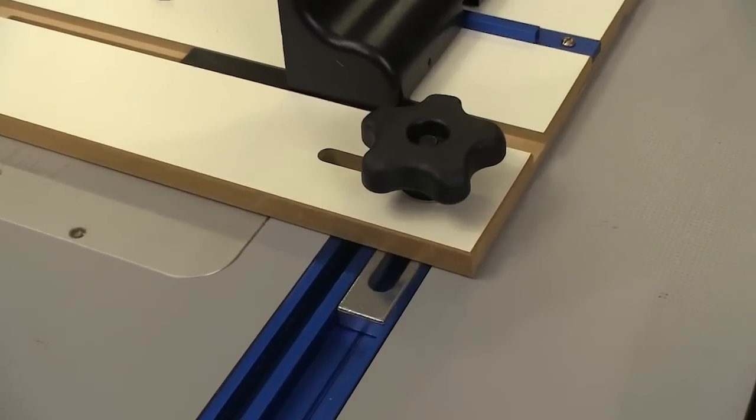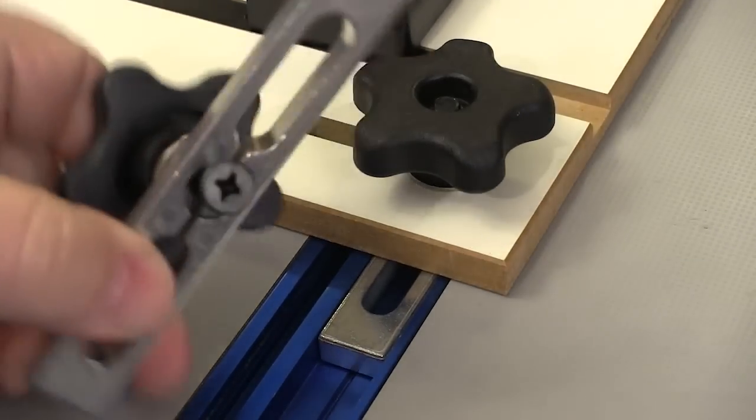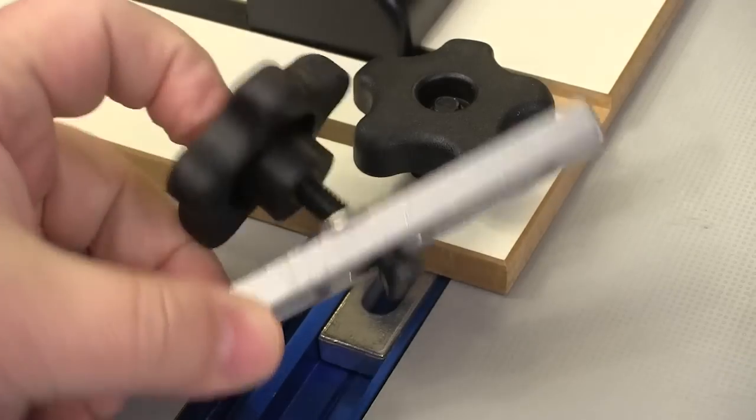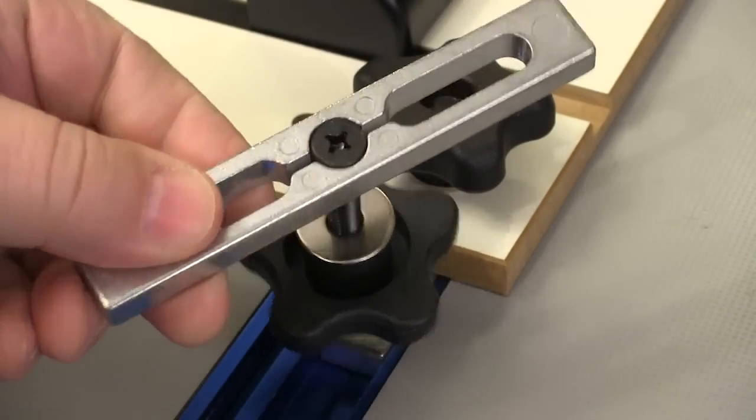The jig is locked in a miter slot by a pair of expanding metal followers. You lock those in place with a pair of 5 Star Knobs from Rockler. I like these because they're a nice diameter and you can get a lot of pressure very easily.